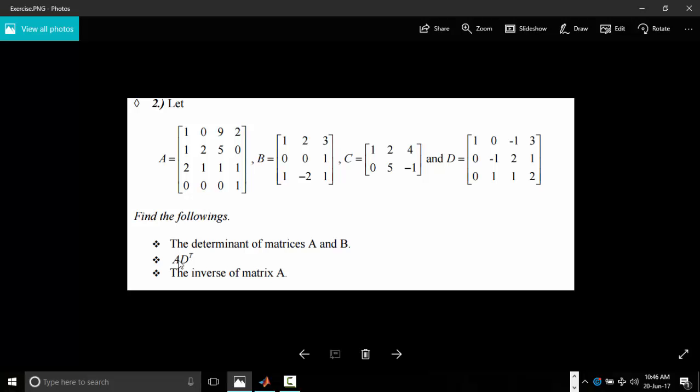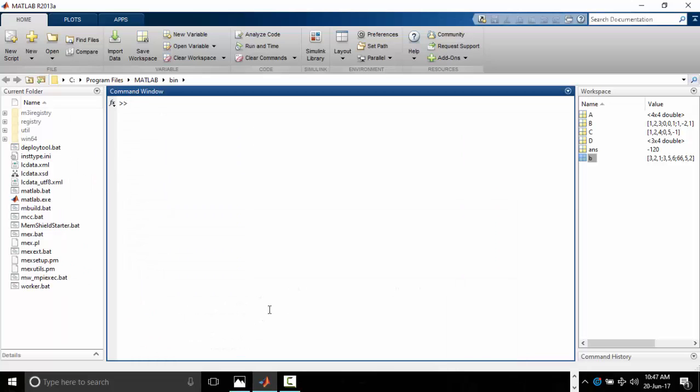AD transpose, so A times D transpose. Let's write A. We've already declared our A, B, our A is there. Then we need D, right D, yes. So we need A multiplied by, now I'm going to pull this one, let's see, multiplied by D transpose. Yes, so this is what we have. We have A multiplied by, so the first thing that will be done is to find our D transpose, then it will be multiplied by A.